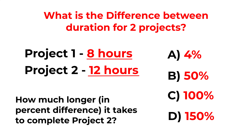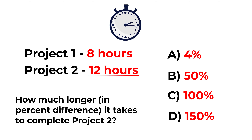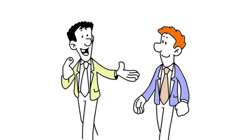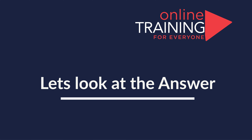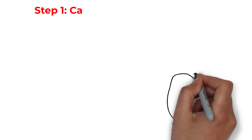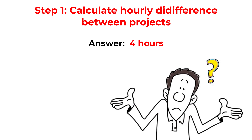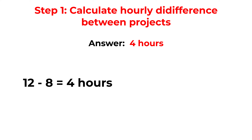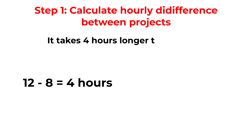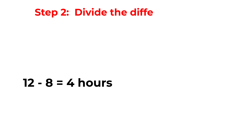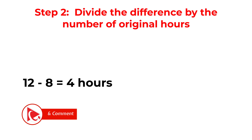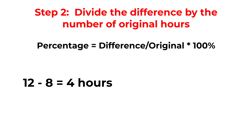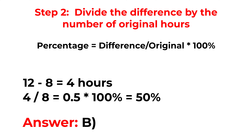To get the correct answer, we first need to find the difference in hours: 12 − 8 = 4 hours. In the second step we divide the difference by the original hours — Project 1's hours: 4 ÷ 8 = 0.5. Then multiply 0.5 by 100% to get the percentage. The correct answer is choice B: 50% increase. Hopefully you've nailed this question and now know how to answer similar problems on the test.